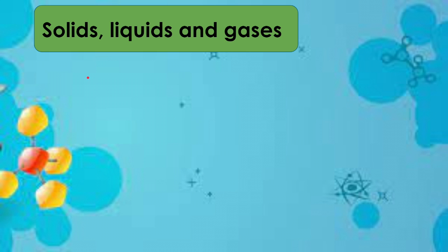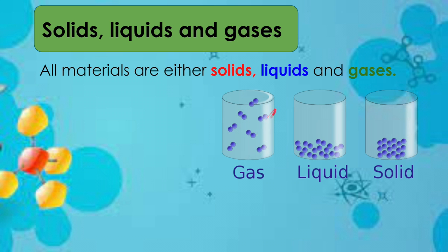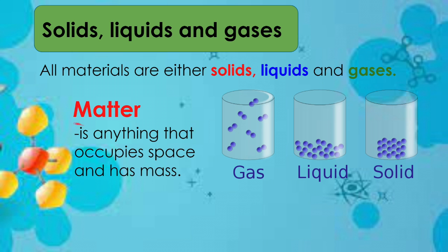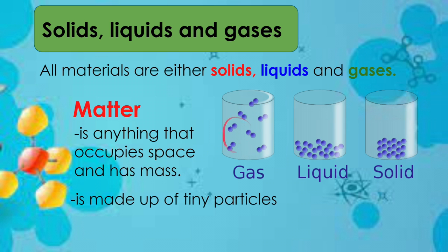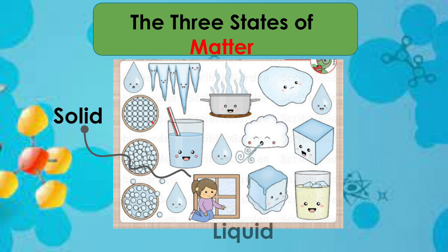Every material is made up of lots of tiny particles. All materials are either solid, liquid, or a gas. A solid stays in its own shape unless we cut it or shape it ourselves — anything you can take hold of is a solid. Solid, liquid, and gas are the three states of matter. Matter is anything that occupies space and has mass; it is made up of tiny particles.